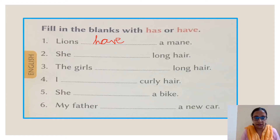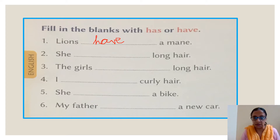Let's move on to the second sentence: she dash long hair. She is one person, so what will come with one person? Has. So we will write here has — H-A-S. Has.